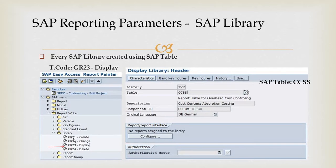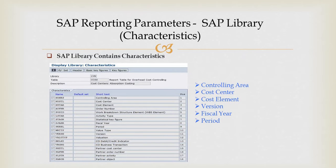Here you can see: GR21 is for creating, GR22 is to change, and GR23 is to display and delete. Before deleting a library you need to first delete all the reports under that library, then delete the library itself. Each library contains characteristics — some characteristics are selected by standard SAP, and you can also select additional ones if you need them for your own reporting.